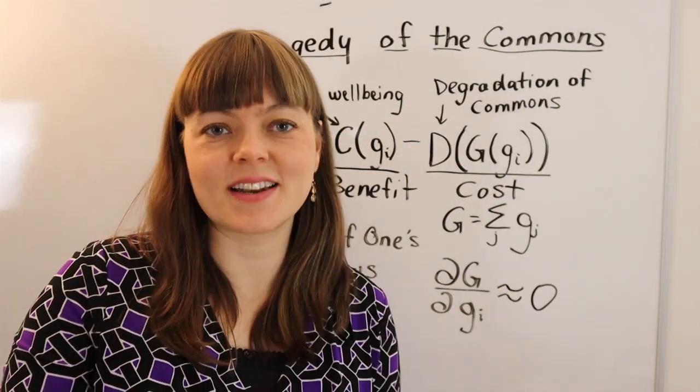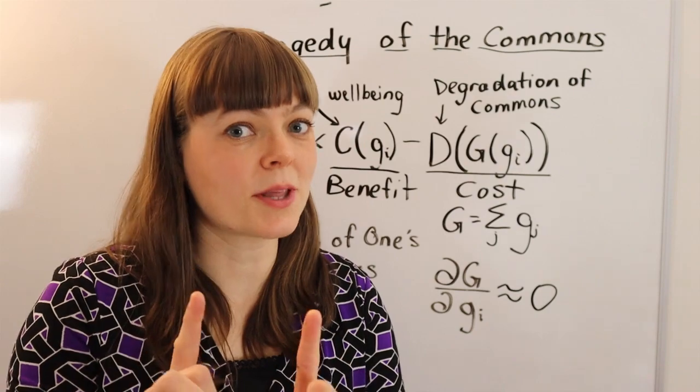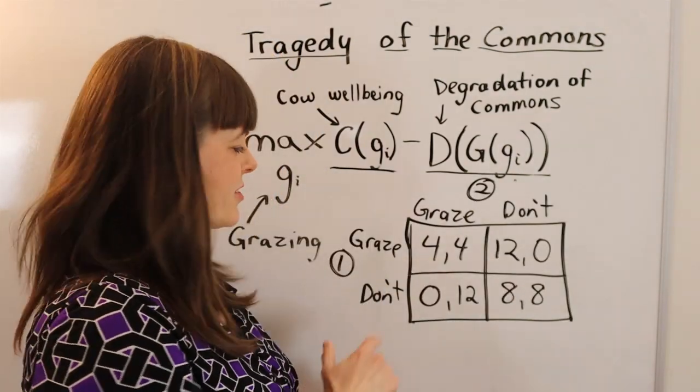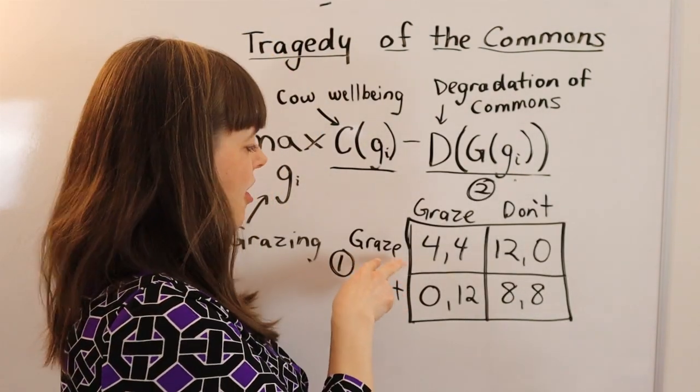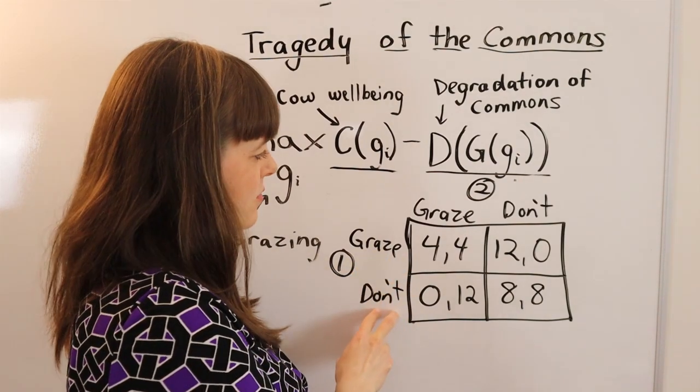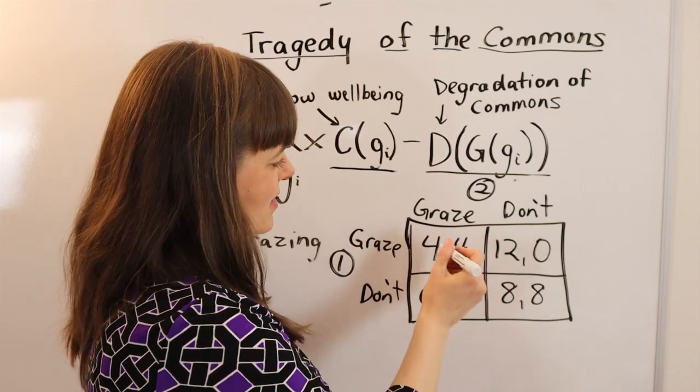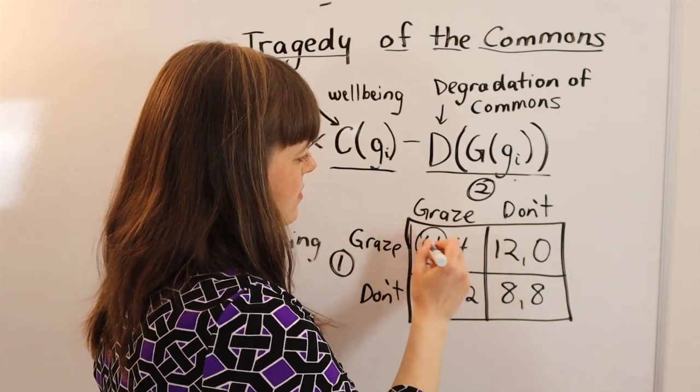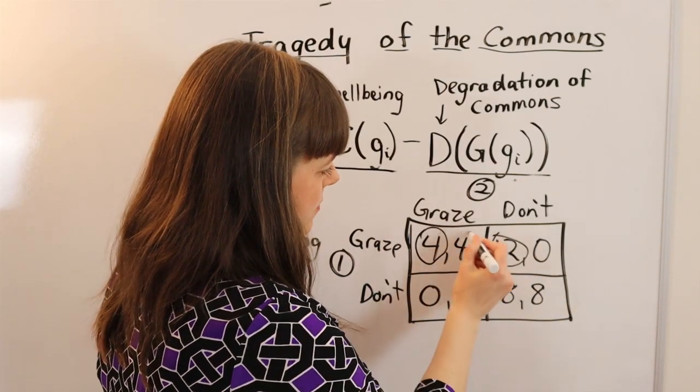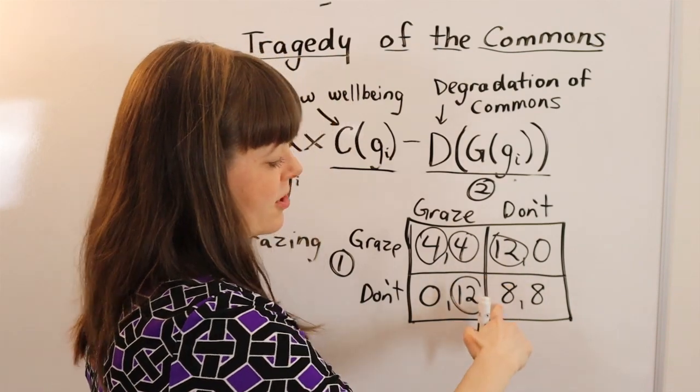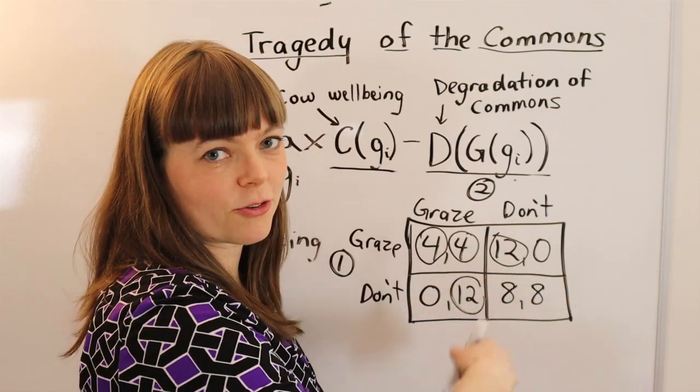And that also makes it like a prisoner's dilemma. So let me show you that. Here we have a prisoner's dilemma where the two options are either you graze your cows or you don't for both players. And of course, both players in this setup have a dominant strategy of grazing their cows, even though both players would be better off if neither grazed.